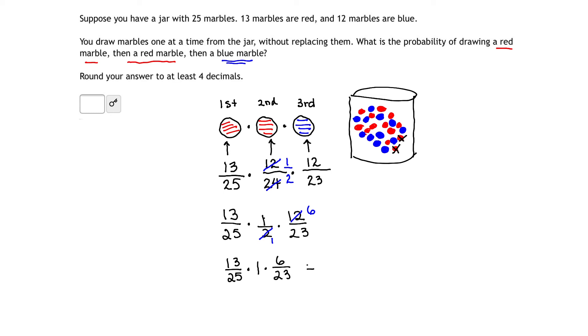And this is going to give me the probability of drawing a red, then a red, then a blue. Let's pull out our calculator. I have a feeling this is going to be an approximation. I'm going to start by multiplying 13 times 6 in the numerator, and that gives me 78. And then I'm going to take 25 times 23 in the denominator, and that gives me 575.